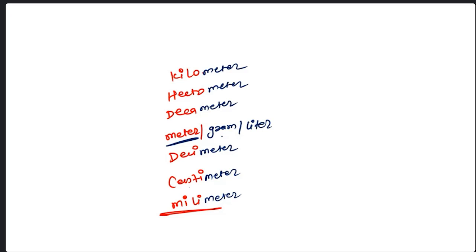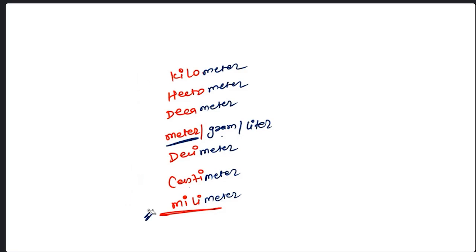As you can see, kilometer is the highest value and milli is the smallest value. If you are going from bigger to smaller, the value will become bigger and bigger.